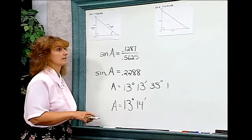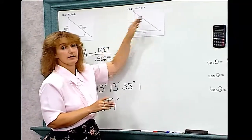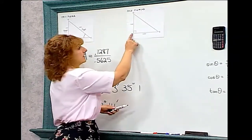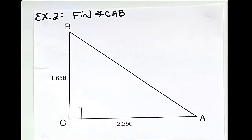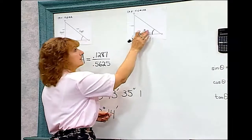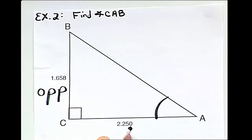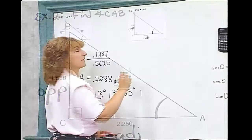Let's look at a second example where we have to find angle CAB. Angle CAB is the same as angle A. This is our opposite side. This is our adjacent side. So in this case, I have opposite and adjacent.